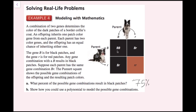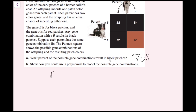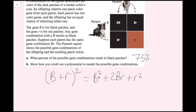For part B, we use a polynomial to model the possible gene combinations. We treat the BR gene as B plus R. Since we do B plus R times B plus R, that's the quantity B plus R squared. Using the square of a binomial pattern, this gives B squared plus 2BR plus R squared, which we can rewrite as BB plus BR plus BR plus RR — all four possibilities, consistent with the Punnett square table.